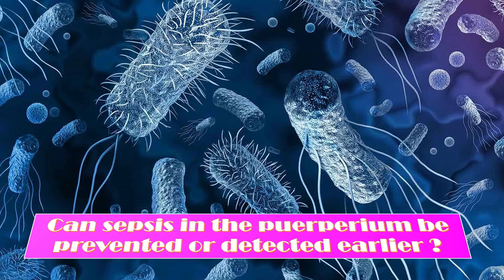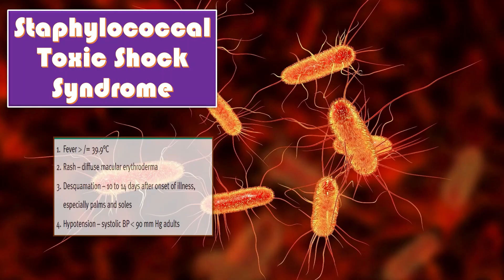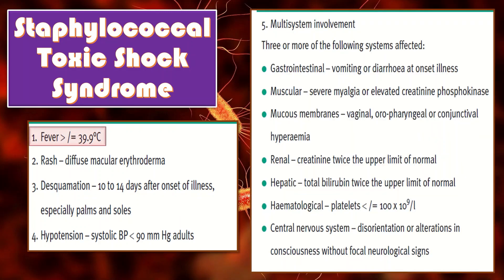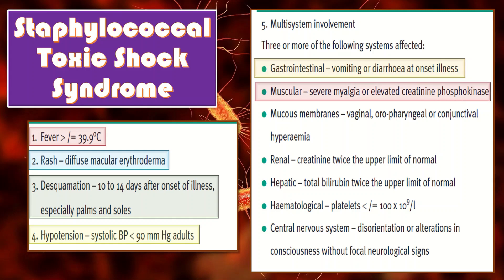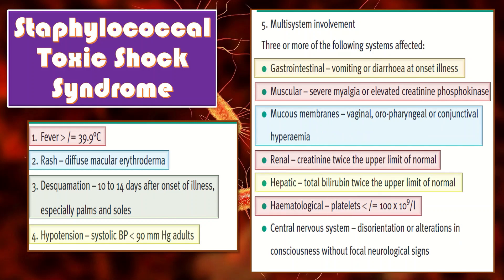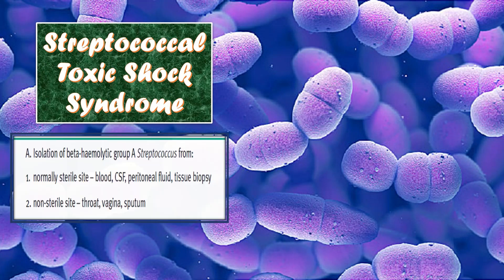All pregnant and recently delivered women should be informed of the signs and symptoms of genital tract infection and how to prevent its transmission. Any group A streptococcal infection identified during pregnancy should be treated aggressively. The staphylococcal toxic shock syndrome criteria include: fever greater than 39.9°C; diffuse macular erythroderma desquamating 10–14 days after illness onset especially on palms and soles; hypotension with systolic blood pressure less than 90 mmHg; and multi-system involvement of at least three systems including gastrointestinal, muscular, mucous membrane, renal, hepatic, hematological, and central nervous system.